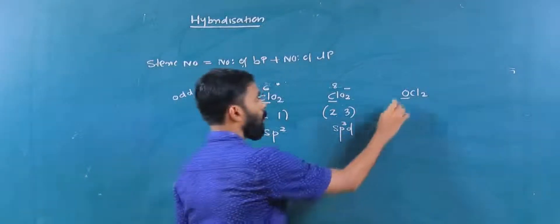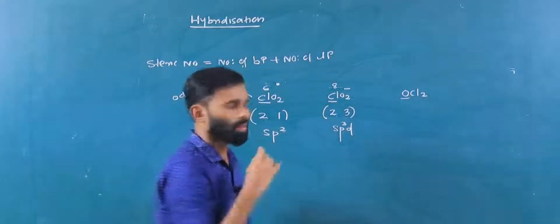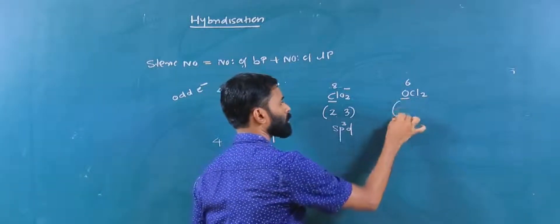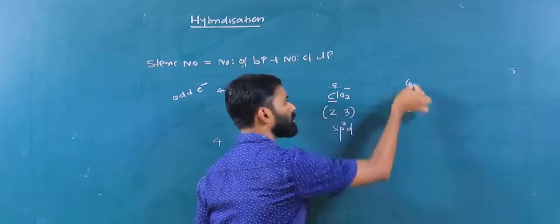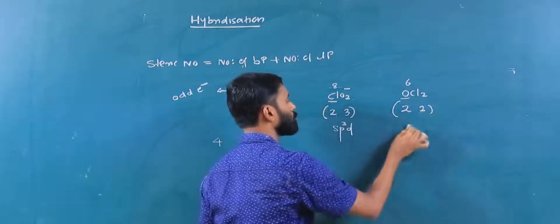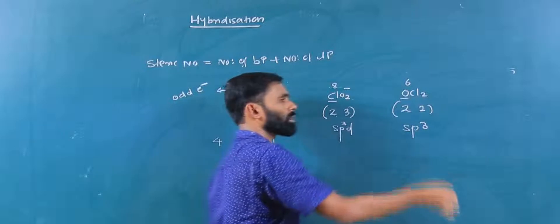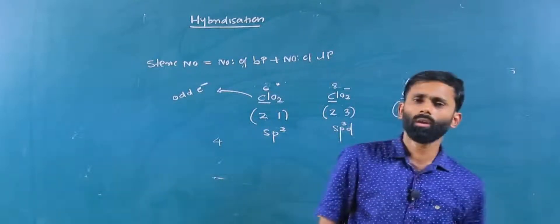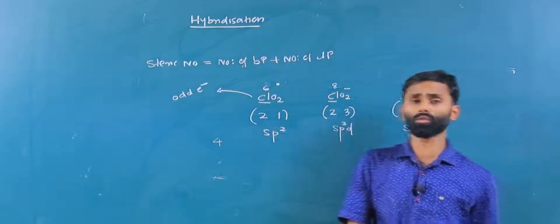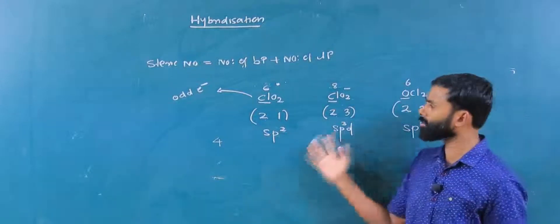Now OCl2 — oxygen is the central element, group 16, valence electrons 6. Forms 2 bonds to chlorine. Calculation: 6 minus 2 equals 4, divided by 2 equals 2 lone pairs. Hybridization is SP3. Using this method, we can identify the central element hybridization in inorganic molecules effectively.